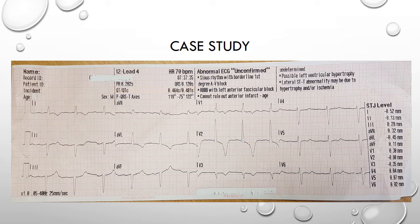So why do we see these changes on an ECG when the problem is in the brain? Cardiovascular complications are common after a brain insult and are associated with an increase in circulating catecholamines and inflammatory responses. These are not the only changes that can be seen on an ECG, but their presence should make you consider cerebral T waves.